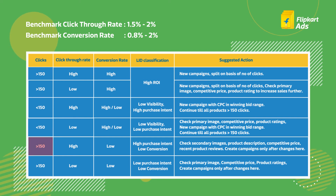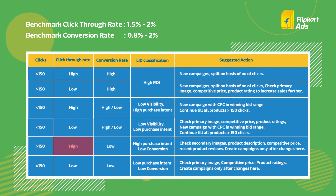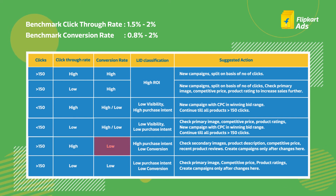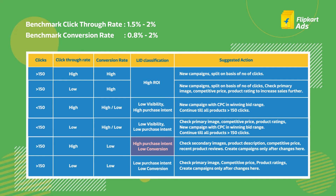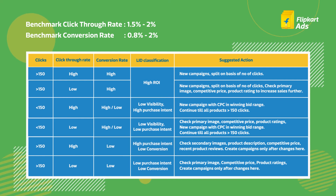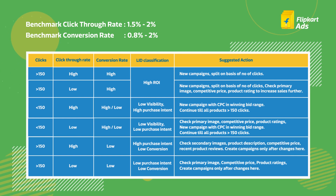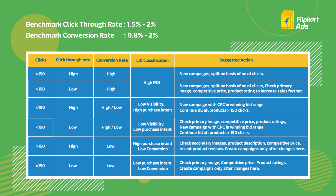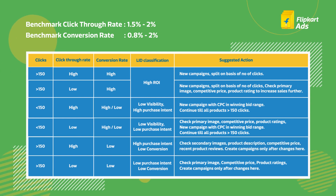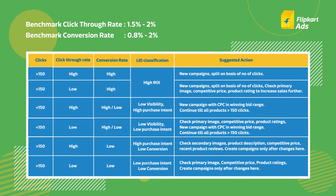Listings with over 150 clicks and high click-through rate but low conversion rate — these are your high purchase intent but low conversion listings. Check secondary images, product description, competitive price, and recent product reviews. Create campaigns only after making changes here.